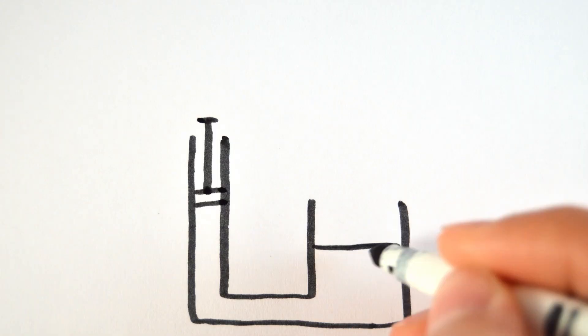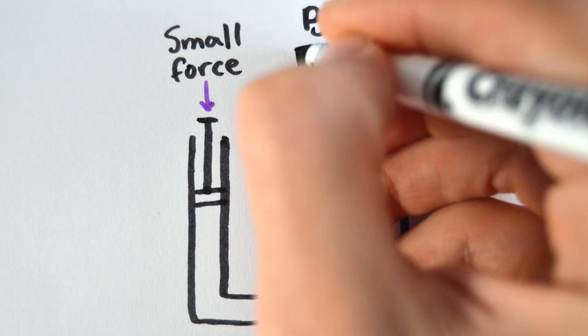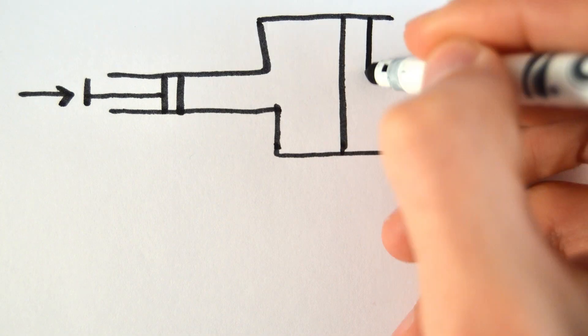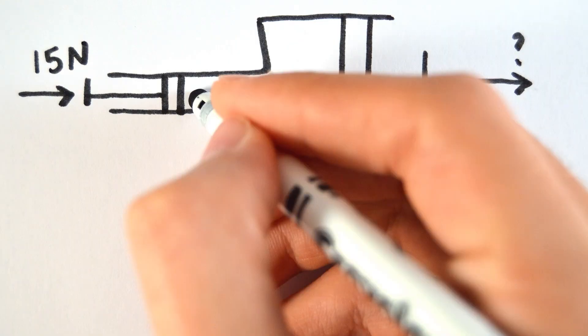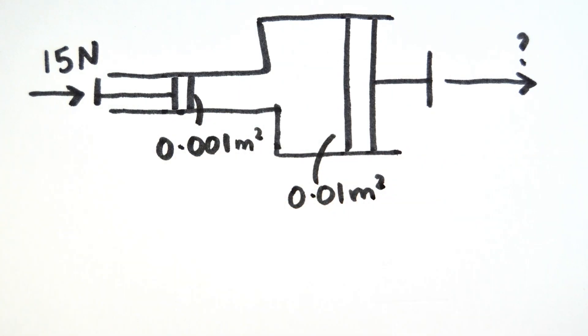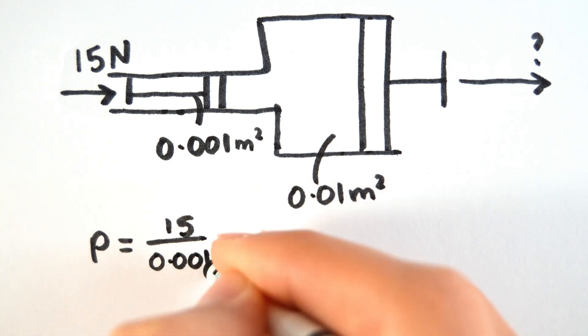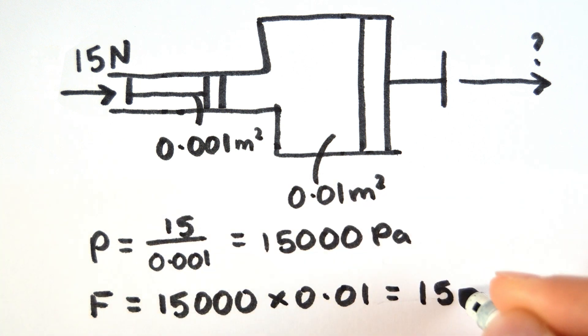A hydraulic system works by applying a small force to one piston to produce a much larger force to a second piston. For example, if one piston has a cross-sectional area of 0.001 square meters, and a force of 15 Newtons is applied to it, then since the pressure is transmitted equally to the other piston of area 0.01 square meters, the force acting on the second piston is 150 Newtons.